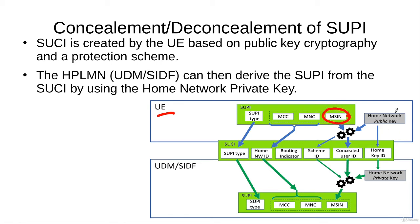The MSIN is encrypted using the home network public key, which is publicly available in the USIM. After encryption, the MSIN is concealed. The ID of the public key used for the encryption is also sent in the SUCI, along with the scheme ID indicating what type of encryption was used. You also have the routing indicator, which is an identifier available in the USIM. The mobile country code and mobile network code are sent as the home network ID, and the SUPI type is sent as-is.